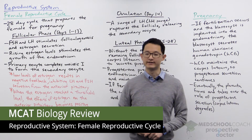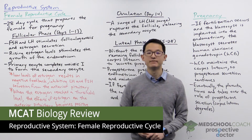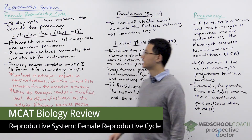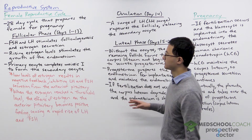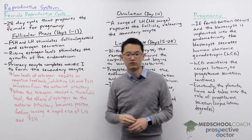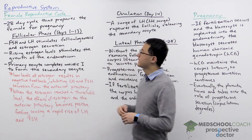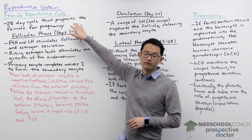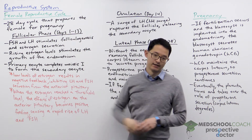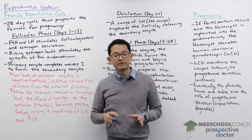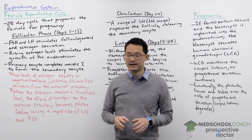In this video we're going to discuss the female reproductive cycle, also called the menstrual cycle. It's a 28-day cycle that prepares the female for pregnancy, and it can be divided into three main phases.